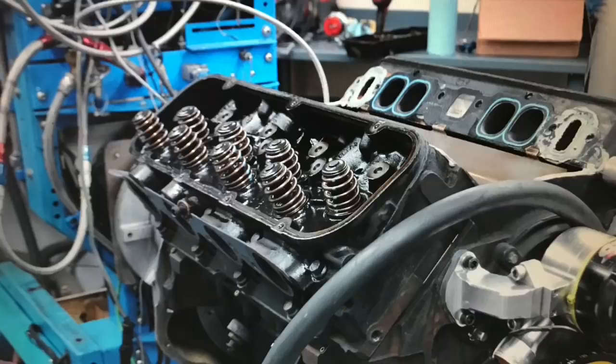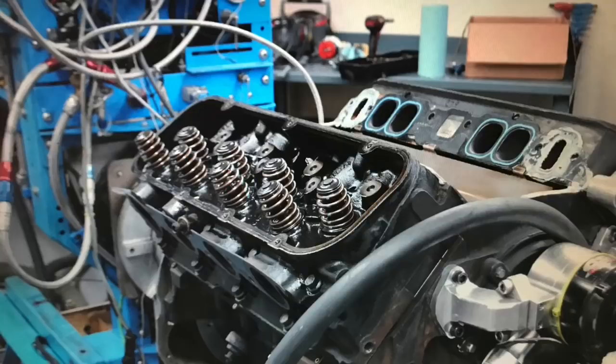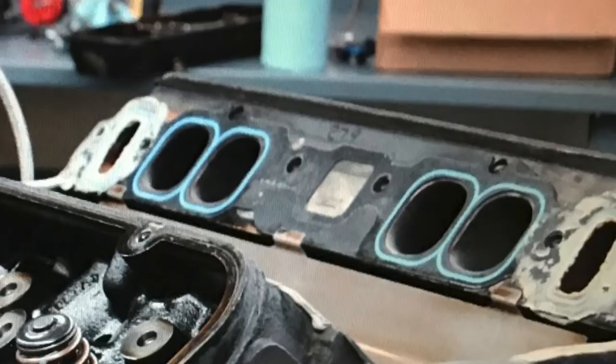If we ask the question, which is better, an aluminum aftermarket head or a factory iron head? The answer seems pretty simple, but there's more to the question than that. Our 1998 Gen 6 454 came with factory iron oval port heads. But unlike the previous generation, the Gen 5, our 1998 version came with full size oval ports. The previous Gen 5 came with small peanut port heads.